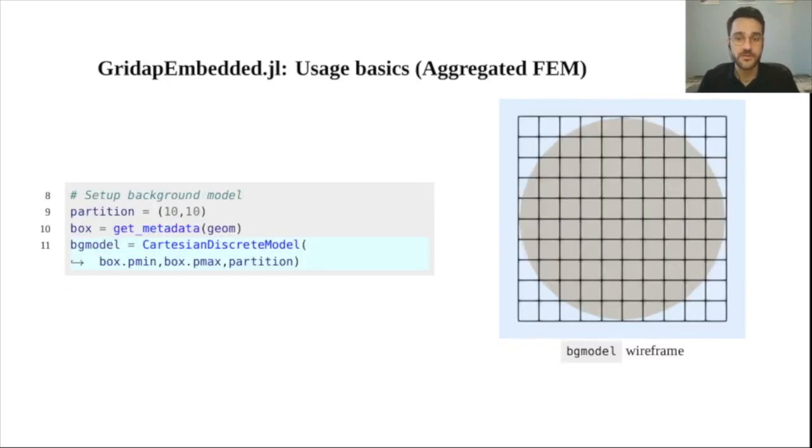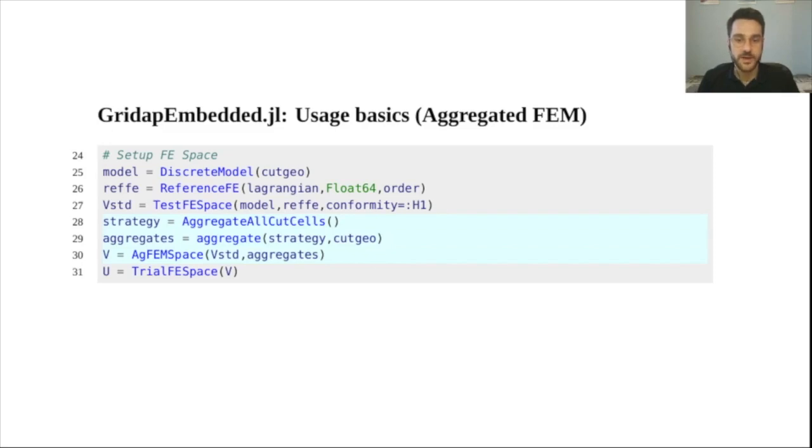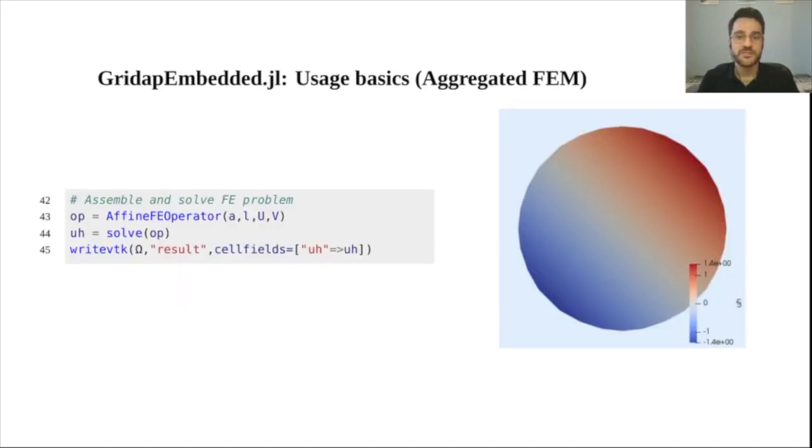The background model can be as simple as a Cartesian grid. Then, we need to cut the background model to generate the meshes where we will integrate the weak form. An aggregated finite element space can be readily defined from a standard one and we can also write our weak form with weak Dirichlet boundary conditions as usually done in embedded methods. From here, we can solve and represent our solution with the same API provided by GridApp.